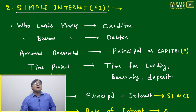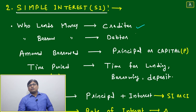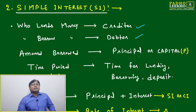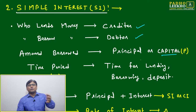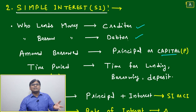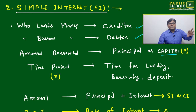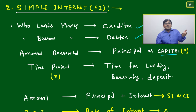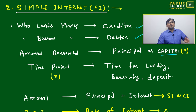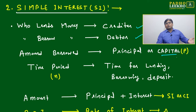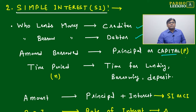Simple interest terminology: the one who lends money is called the creditor, and the one borrowing the money is called the debtor. The amount borrowed is called principal or capital, generally denoted by P. In banking law there are many such terminologies for creditor, debtor, borrower and lender. Another key term is time period, denoted by N — the time for lending.